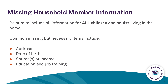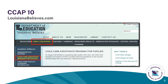You can report changes through the Report of Change form, also known as a CCAP10. You can complete the CCAP10 form on the CAFE Customer Portal, or you can download or print the form. The link to the portal as well as the link to the CCAP10 Report of Change form can be found at LouisianaBelieves.com under the Early Childhood site.